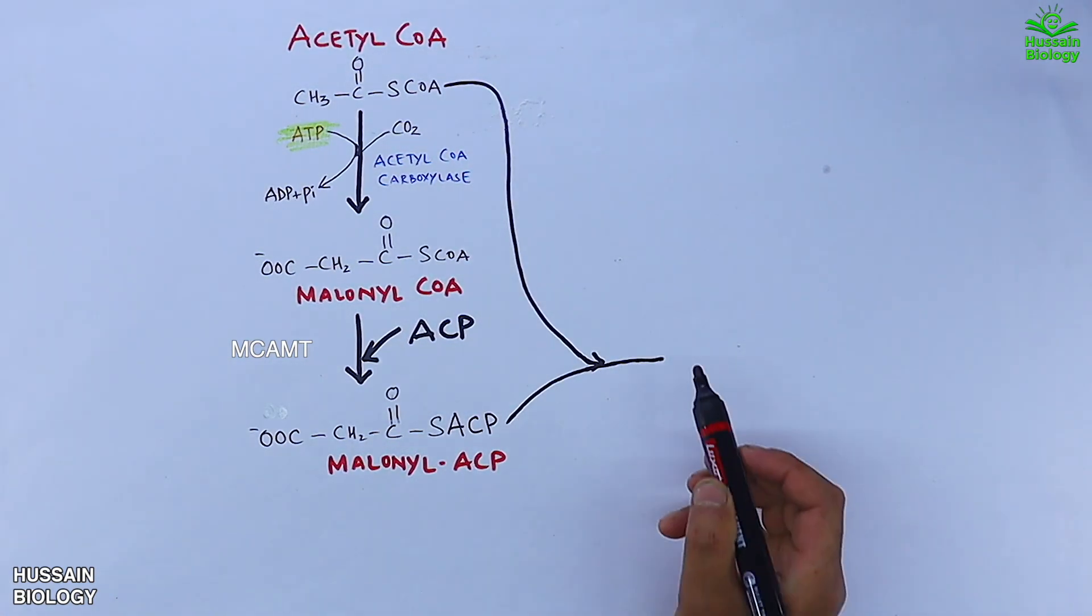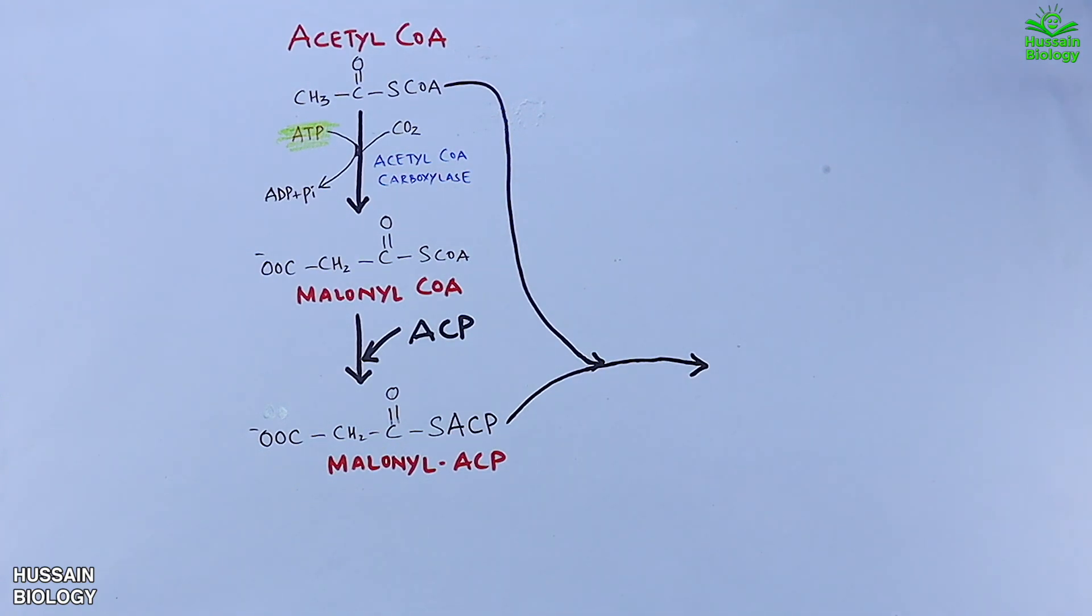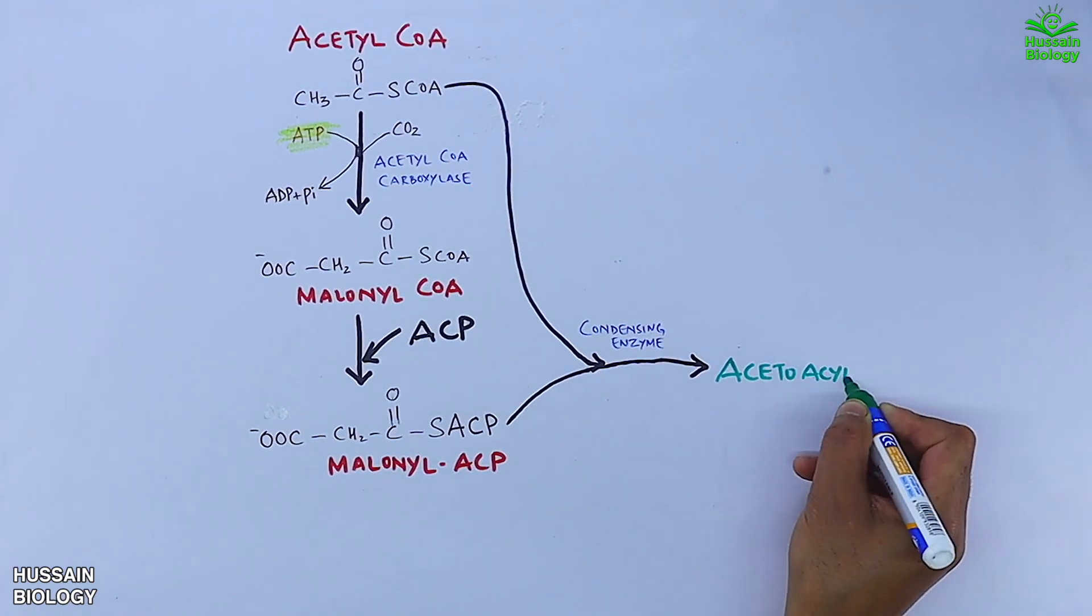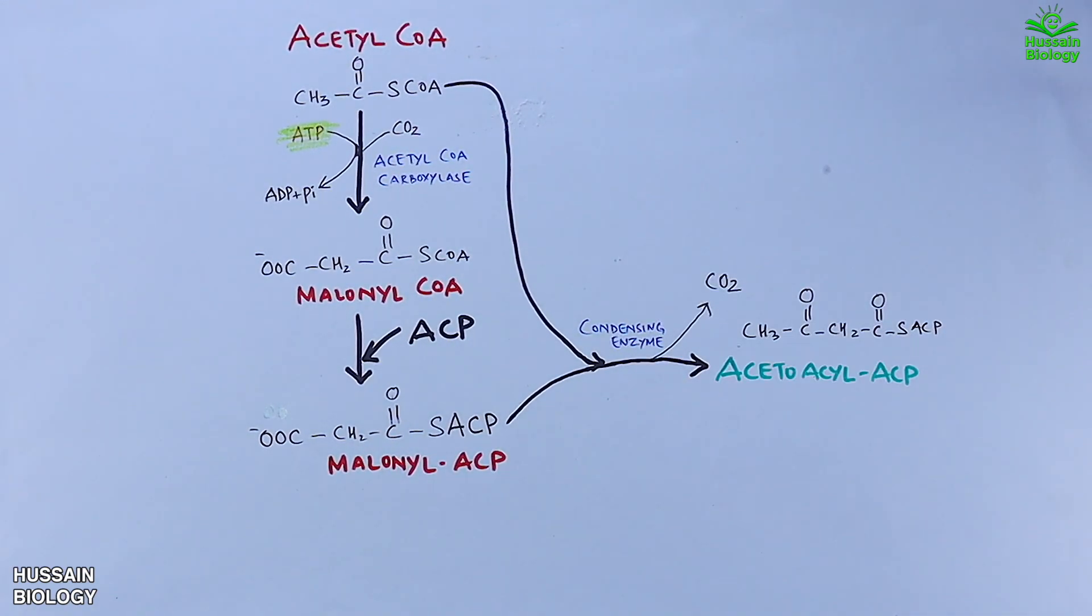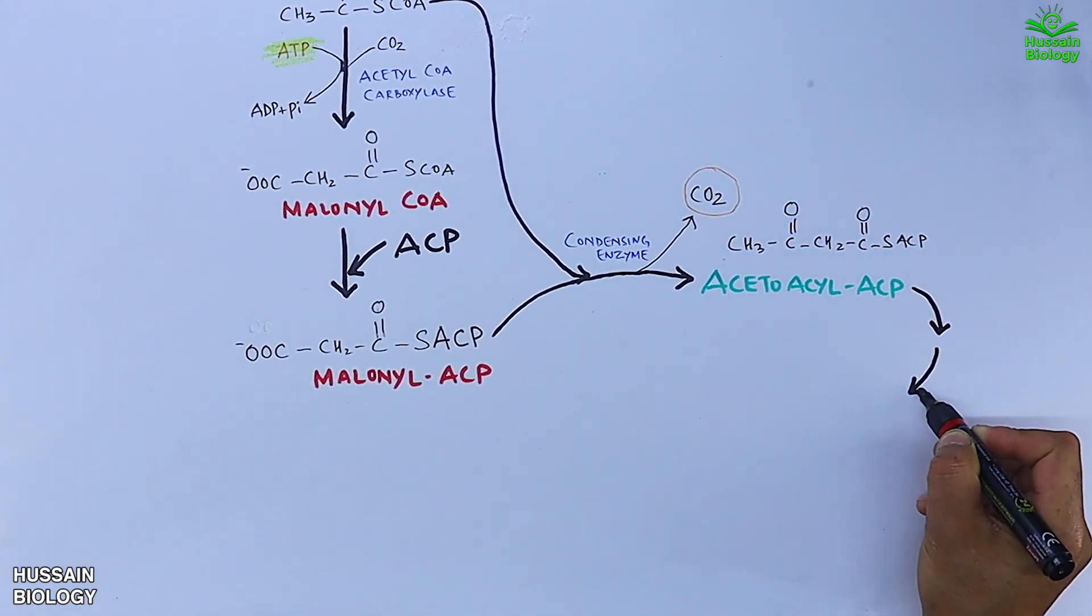In this diagram, we can see acetyl CoA combines with malonyl ACP by the action of an enzyme, 3-ketoacyl ACP synthase, to form acetoacetyl ACP. Then we see a series of reactions where the keto group at carbon-3 is removed.